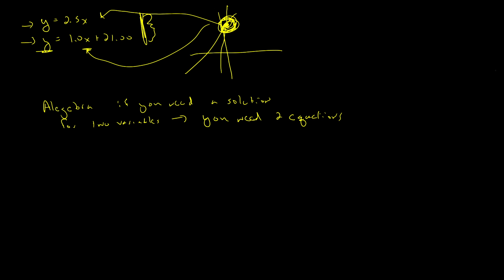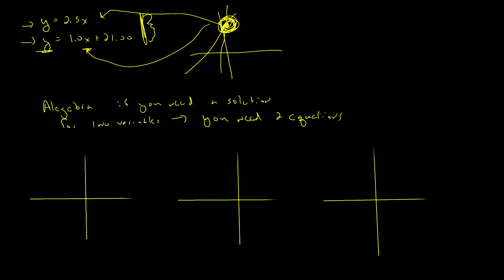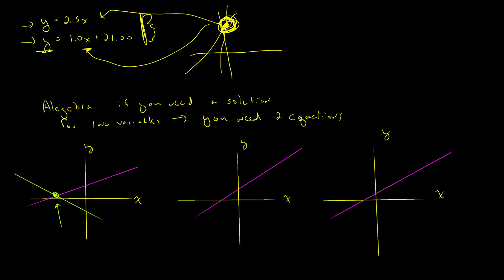The thing about systems of equations — we'll use our lines as an example. There are three possibilities, and these three possibilities exist in different forms for any system of equations, whether it's two, three, or four variables. Let me draw three sets of axes to show you. I'm going to have two equations — one in purple and one in green. The first possibility is that the two lines meet at exactly one point, and we say this is the solution for the system.